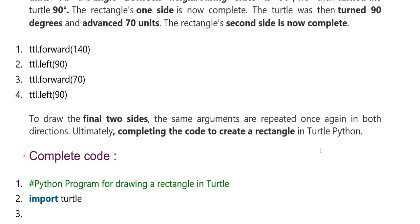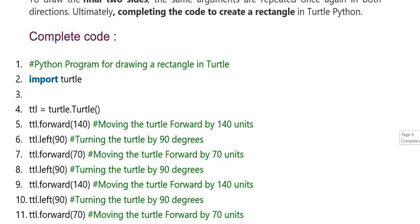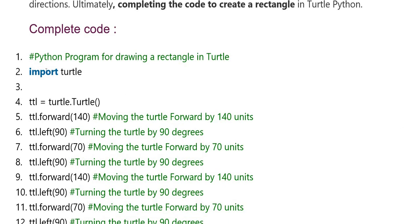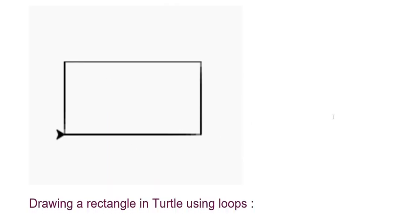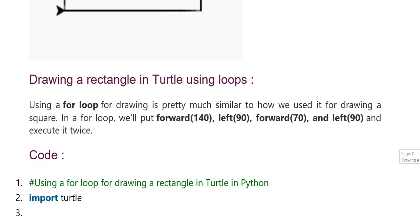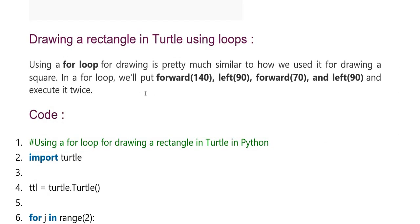Complete code creates a rectangle in turtle Python. Complete code output: Python program for drawing a rectangle in turtle. Import turtle, move forward 140, 90 degrees, forward 70 degrees, 90 degrees, 90 degrees, 70. This way we will represent this way. Output here: rectangle represented. Draw rectangle in turtle using loops.